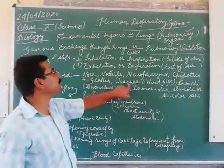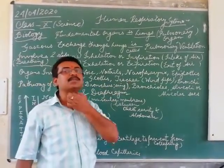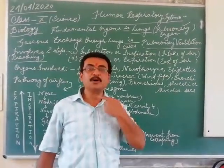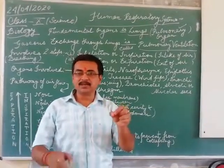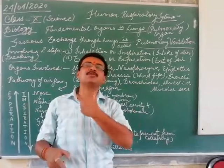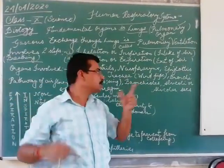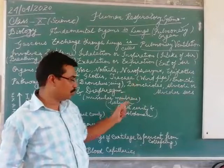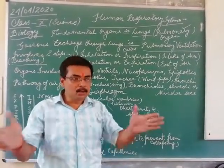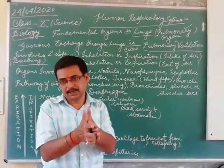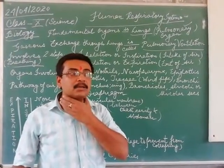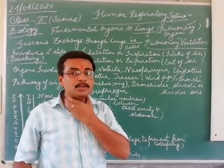Then we have our trachea which is called as the windpipe. Now this windpipe has rings. These rings are not complete rings — these are C-shaped rings, meaning the rings go around from the front but are open at the back. These rings prevent the collapsing of the trachea when we are exhaling.